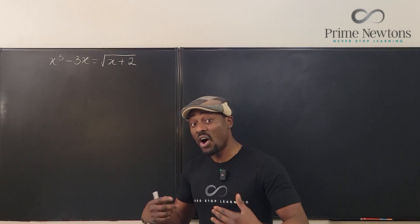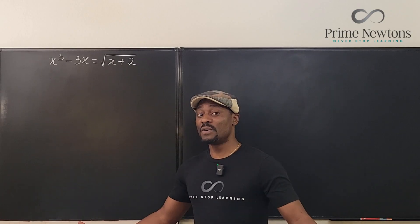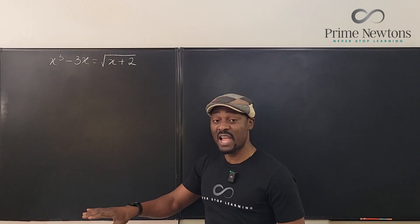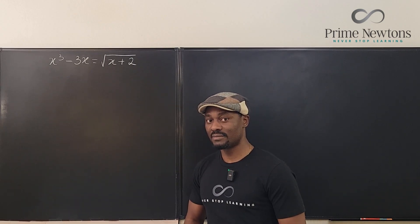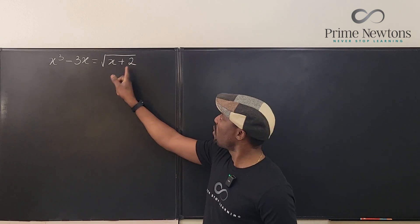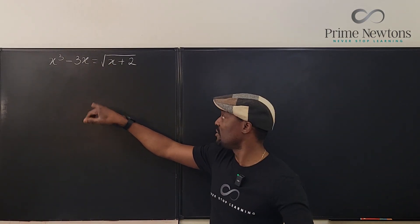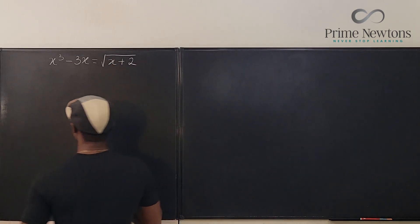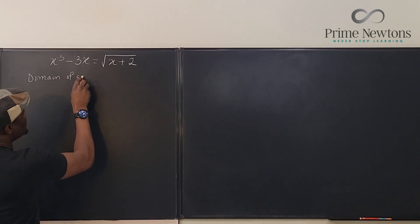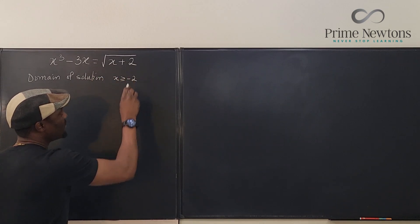Why is this equation a hard equation to solve? Number one, I am not sure of how many solutions I'm supposed to get. In order to be safe when you solve equations like this, you want to know what can be the answer and what cannot be the answer. What cannot be the answer? Under the square root sign, you can't have a negative. So what would make this negative? It is if this number is less than negative 2, because then you're going to have a negative under the square root sign. So the domain of our solution will be x must be greater than or equal to negative 2.